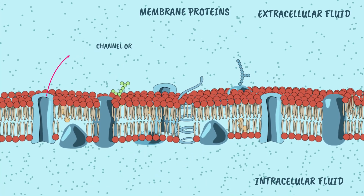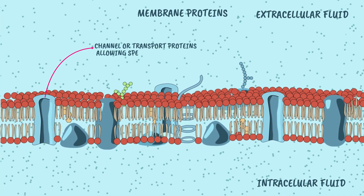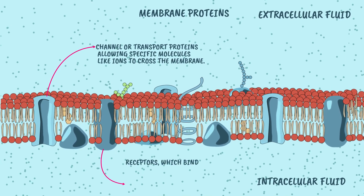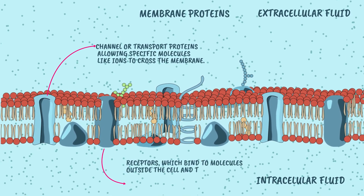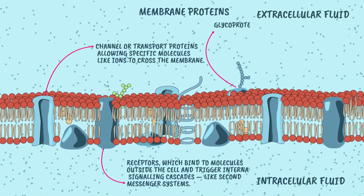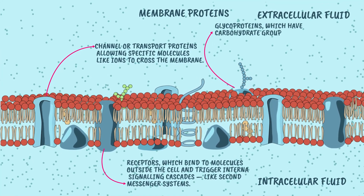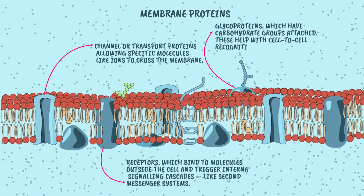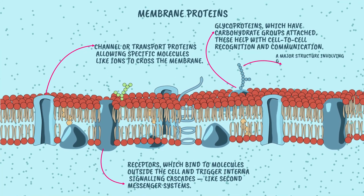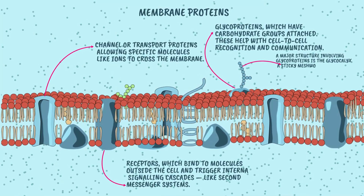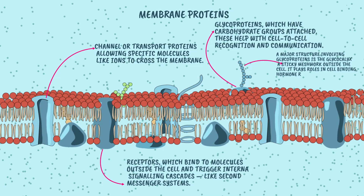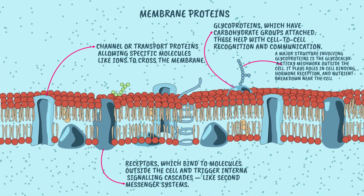Integral proteins include channel or transport proteins, allowing specific molecules like ions to cross the membrane; receptors, which bind to molecules outside the cell and trigger internal signaling cascades like second messenger systems; and glycoproteins, which have carbohydrate groups attached and help with cell-to-cell recognition and communication. A major structure involving glycoproteins is the glycocalyx — a sticky meshwork outside the cell that plays roles in cell binding, hormone reception, and nutrient breakdown near the cell surface.